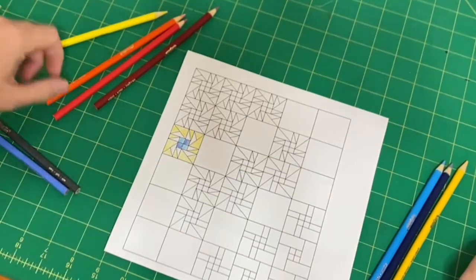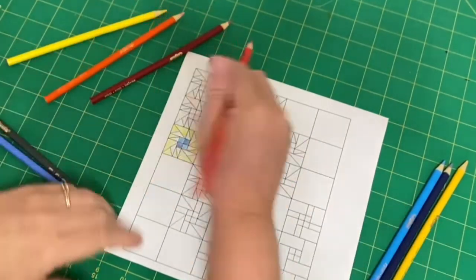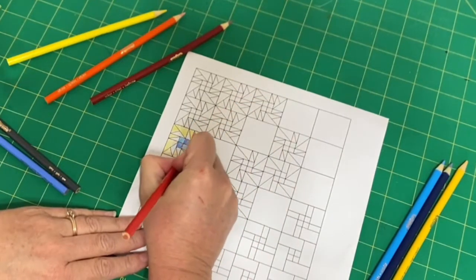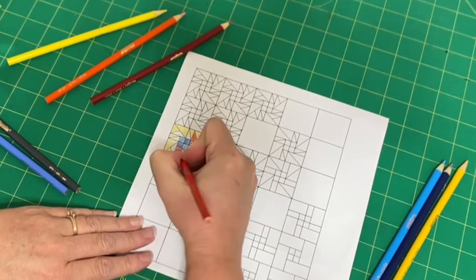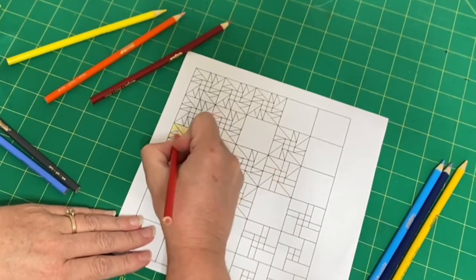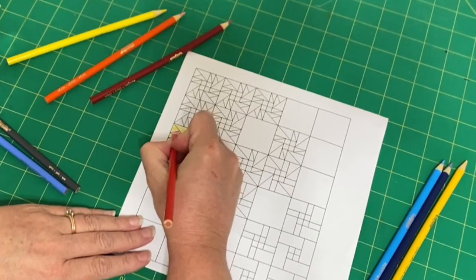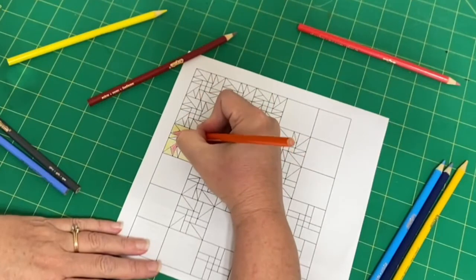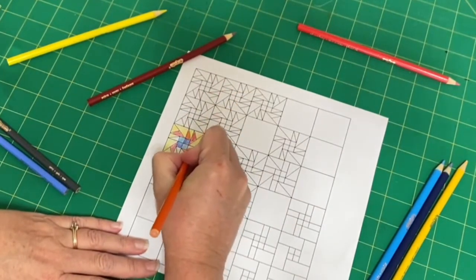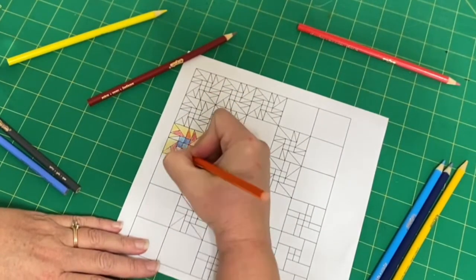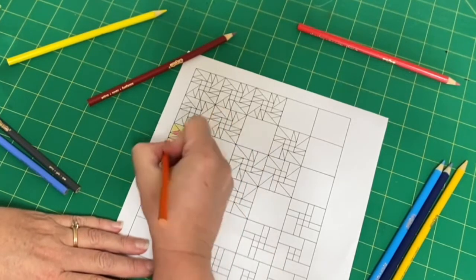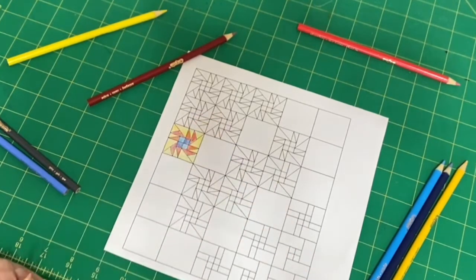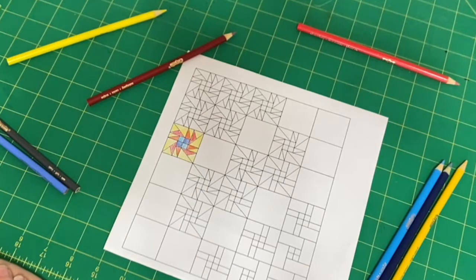And then we can go to our reds. And I want this big triangle to be that darker color. And then I'll go ahead and color this orange. Of course, when you go to select the actual fabrics, you can get as scrappy as you want. You may change the tone of the colors from your sketch and decide to do something different.